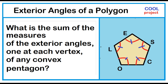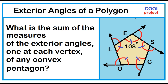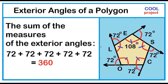Let's consider pentagon E-S-C-O-L. Each angle measure of this pentagon is 108 degrees. Let's extend the sides of this pentagon to form exactly one exterior angle at each vertex. The sum of the measures of the exterior angles is 360 degrees.